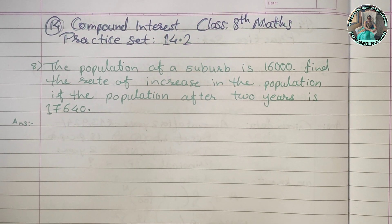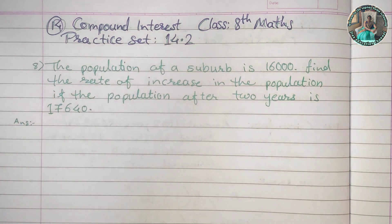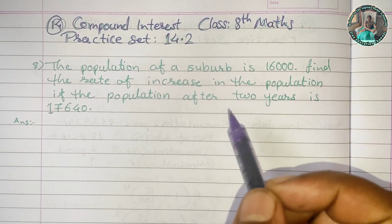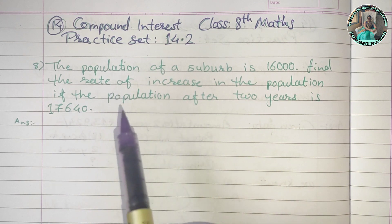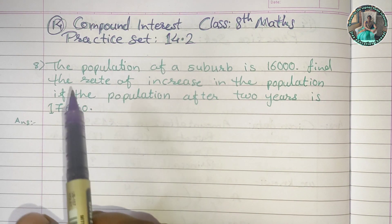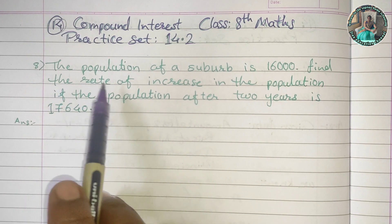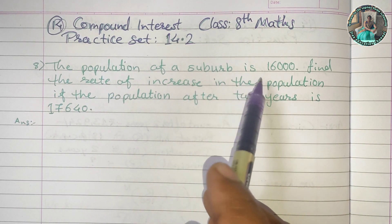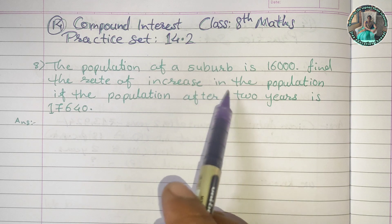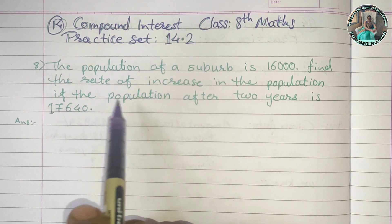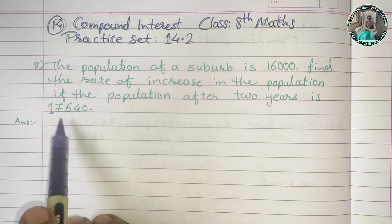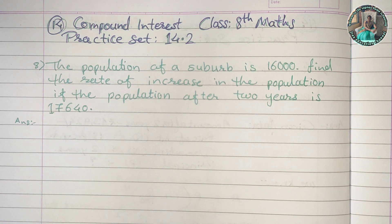today we are going to solve question 8 from our practice set 14.2. The population of a suburb is 16,000. Find the rate of increase in the population if the population after 2 years is 17,640.